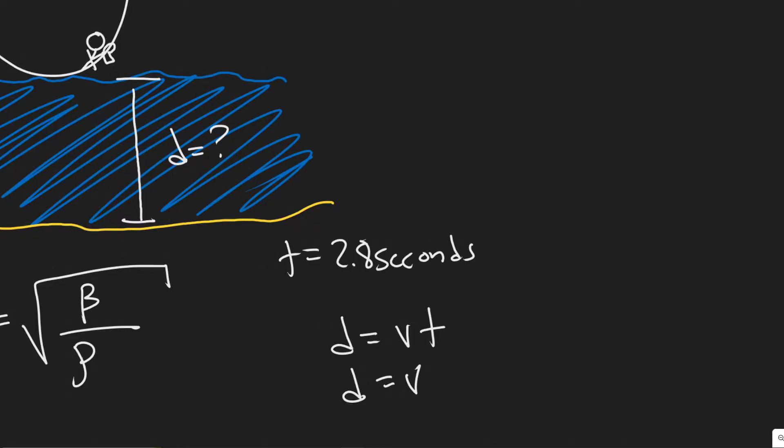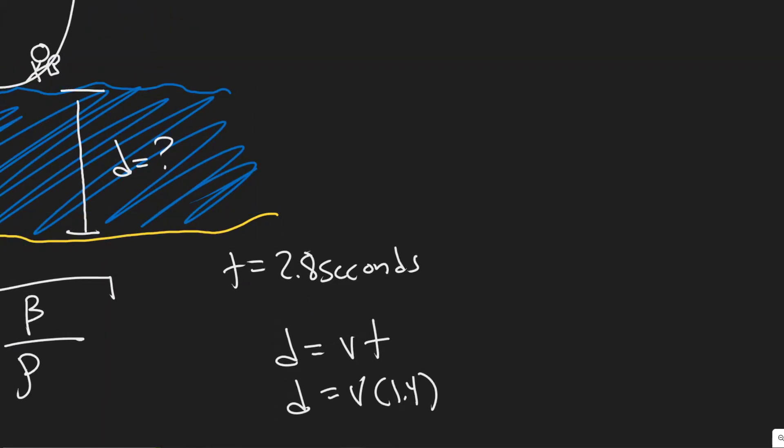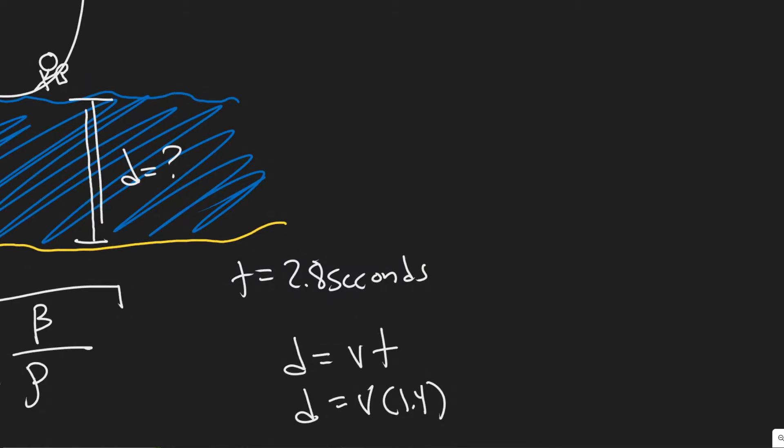If we're just trying to find d, which is the distance to the bottom, we're only going to use for our time value 1.4 seconds, since the distance only goes one way. We have to split the time in half since the time is for both going down and then up.